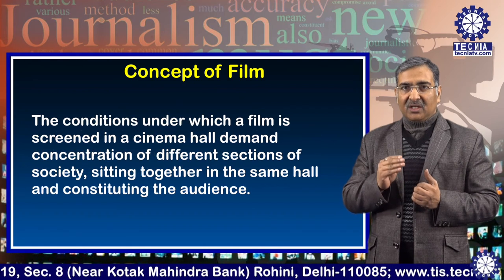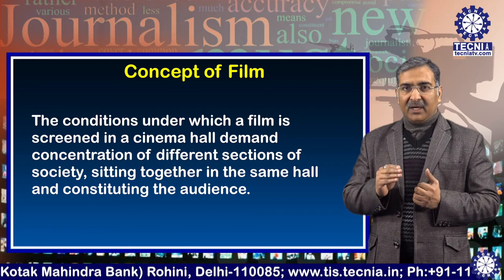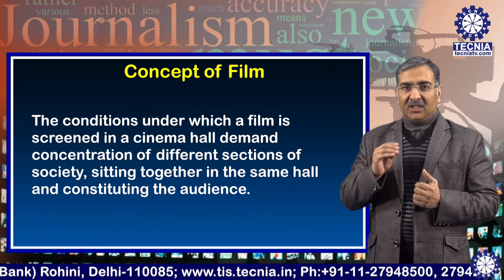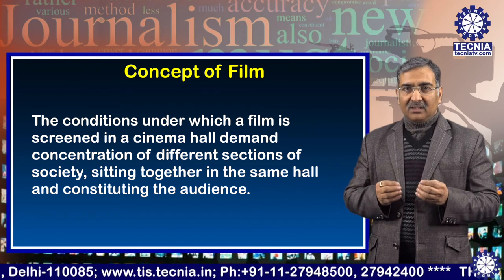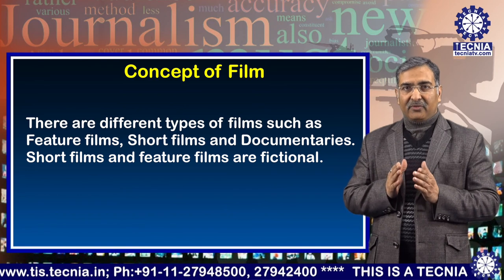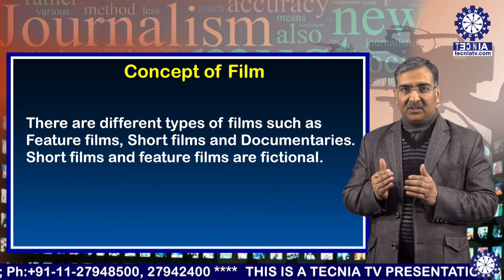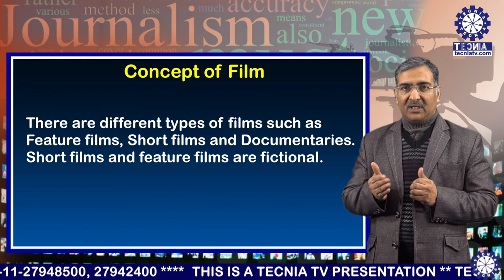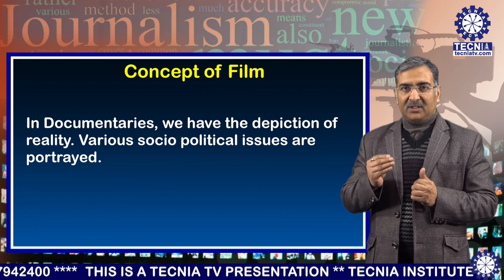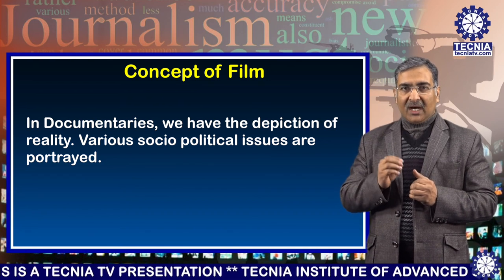The conditions under which a film is screened in a cinema hall demanded concentration of different sections of society sitting together in a same hall and constituting the audience. There are different types of films such as feature films, short films and documentaries. Short films and feature films are fictional. In documentaries, we have the depiction of reality, and various socio-political issues are portrayed.